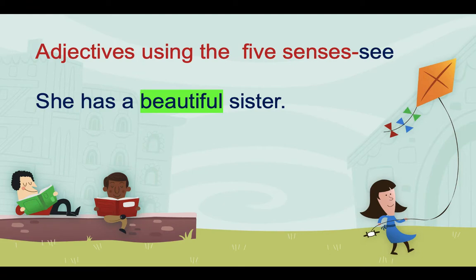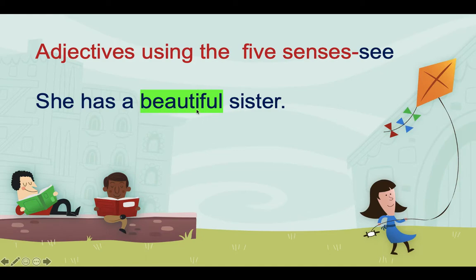Let's first look at adjectives using the five senses, starting with sight. 'She has a beautiful sister.' Here we use our sense of seeing. 'Sister' is the noun, and you can see the adjective comes right before the noun. The word 'beautiful' is describing how the noun looks — that is, how the sister looks.